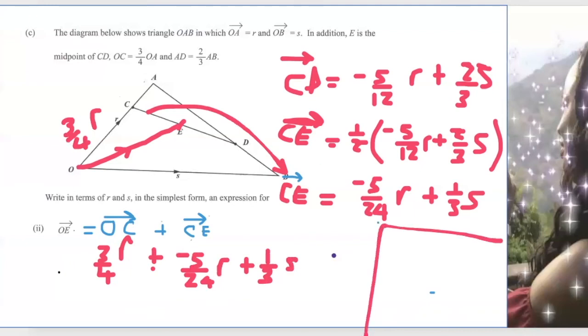So I will have to add three-quarter plus minus 5 over 24. Finding the LCM for 4 and 24, that will be 24. Then 4 into 24 goes 6 times, so 6 times 3, that's 18. I have my subtraction sign. 24 into itself goes 1 times, so 1 times 5 is 5.